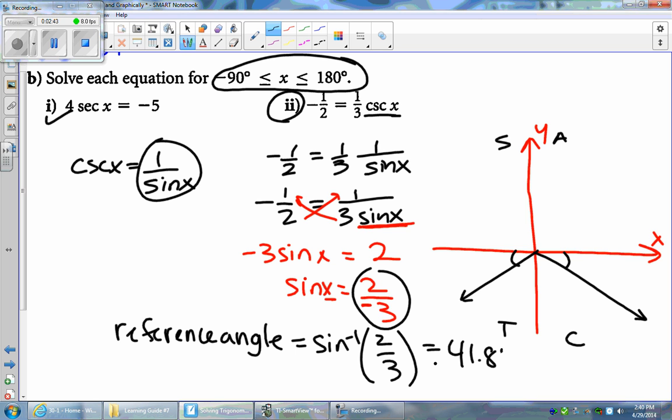So where is this angle on my Cartesian plane? So this is the reference angle. So this angle right here is 41.8 degrees. And this angle right here is also 41.8 degrees. So it's not necessarily my answer, but it's going to help me find the answers.